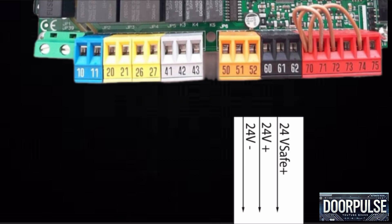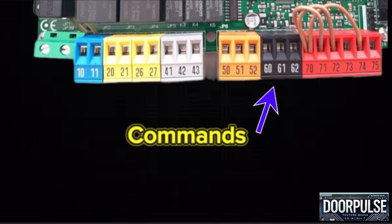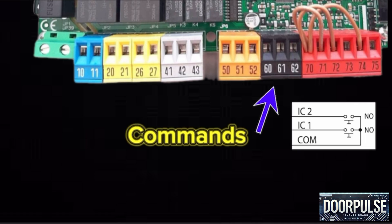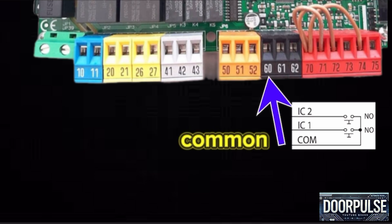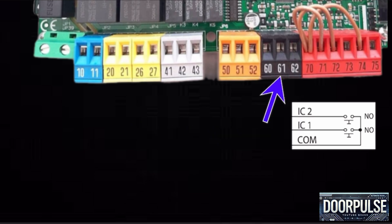JP7 block: a block for commands means selector switch or push button you can use by pressing the door opening, close and stop. Terminal 60 is inputs common for terminal 61 and terminal 62.